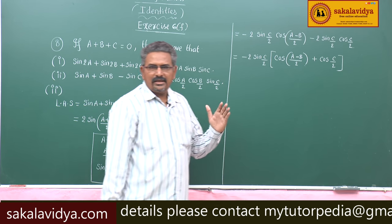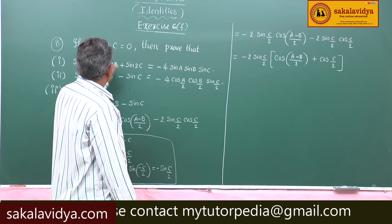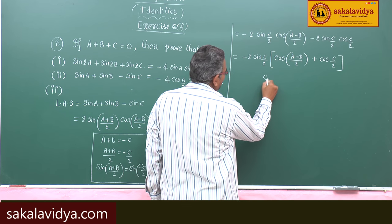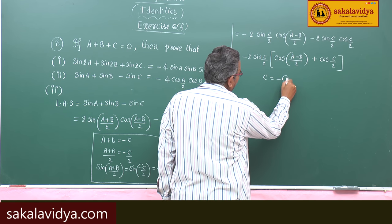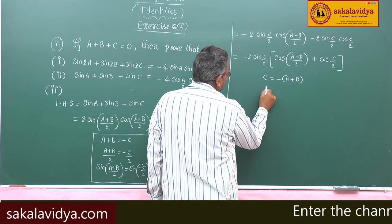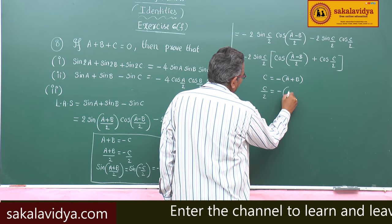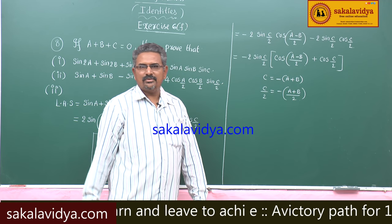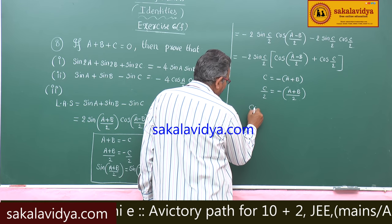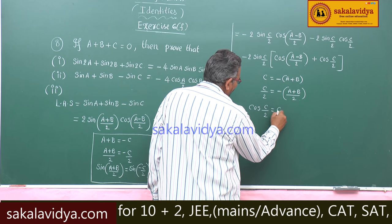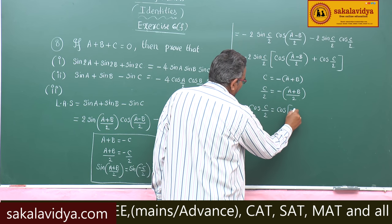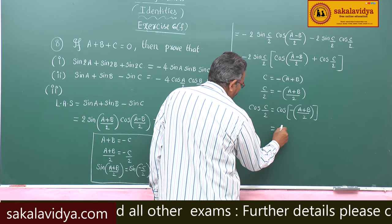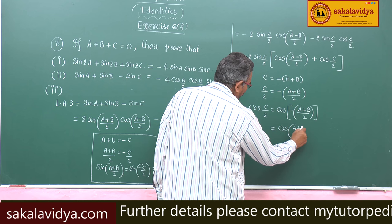Now let us replace cos(C/2). Since A + B + C = 0, C = -(A+B), so C/2 = -(A+B)/2. Applying cos on both sides: cos(C/2) = cos(-(A+B)/2) = cos((A+B)/2), since cos(-θ) = cos θ.